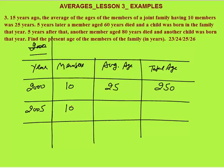Five years later in 2005: if no one had died, each person would be 5 years older, average would increase to 30, and total would be 300. But a 60-year-old member died, so subtract 60 from total, and a child was born with age zero — add zero. Total becomes 300 minus 60 plus 0 equals 240. Members remain 10. Average in 2005 is 240 divided by 10 equals 24 years.